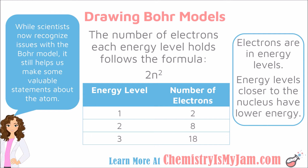It still helps us picture the fact that the electrons are located within energy levels in the atom. The energy levels that are closest to the nucleus have lower energy. One thing that you should be aware of as you learn to draw Bohr models is that the number of electrons that each energy level holds follows a certain formula. The formula is 2n squared, where n is the energy level.